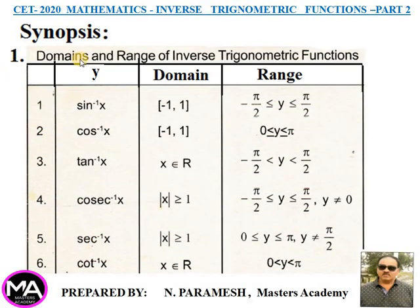Synopses. First point: Domains and Range of Inverse Trigonometric Functions. First: y = sin⁻¹x. Domain: closed interval [−1, 1]. Range: closed interval [−π/2, +π/2].